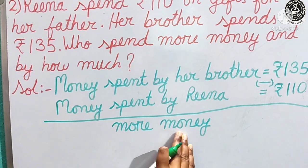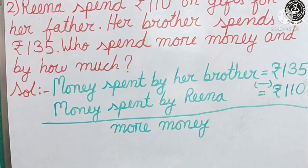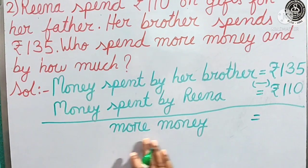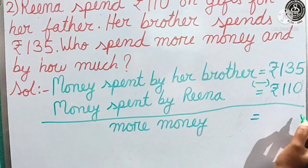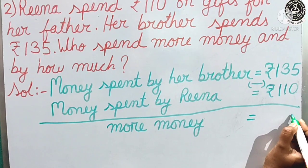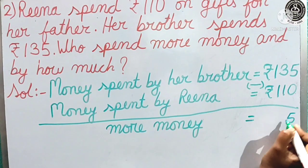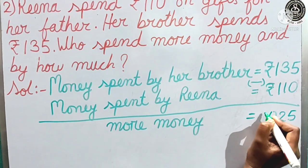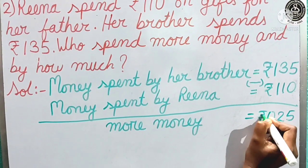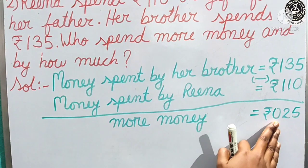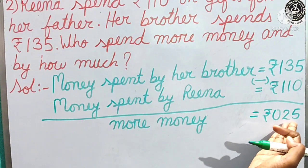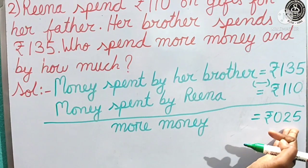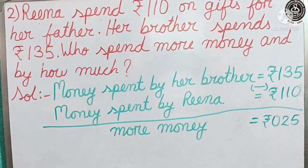You can write: more money spent by her brother equal to. I am writing it in a short way — more money. 5 minus 0 is 5. 3 minus 1 is 2. 1 minus 1 is 0. Give the rupee sign. We are not going to read the leading zero, so we read 25 rupees. That means Reena's brother spent 25 rupees more.